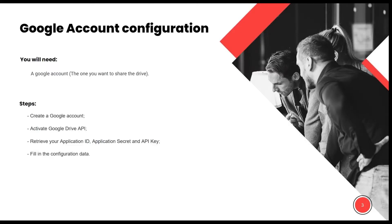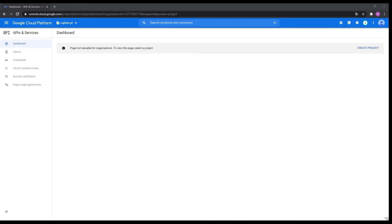The Google account configuration is pretty simple. You need a Google account — this is the one you want to share the drive. You need to activate the Google Drive API, retrieve your application ID, application secret, and API keys. The application secret is also called client secret, and you need to fill in the configuration data which I'm going to show you right now in the demo.